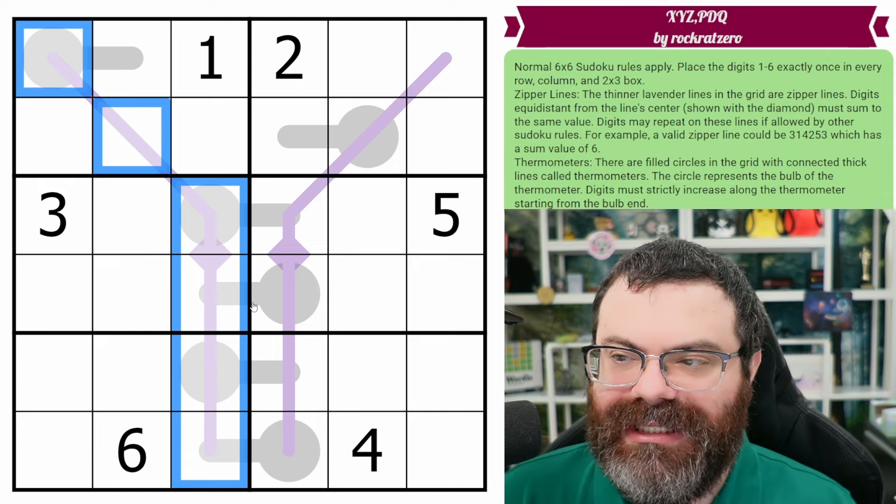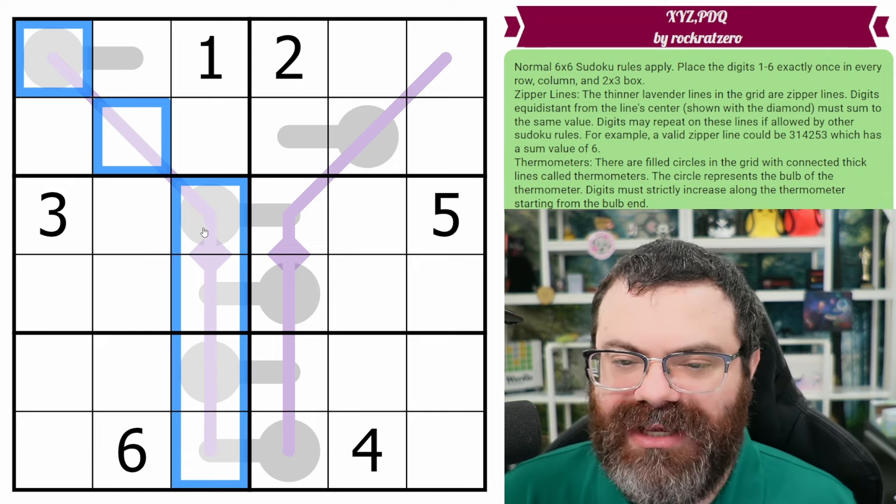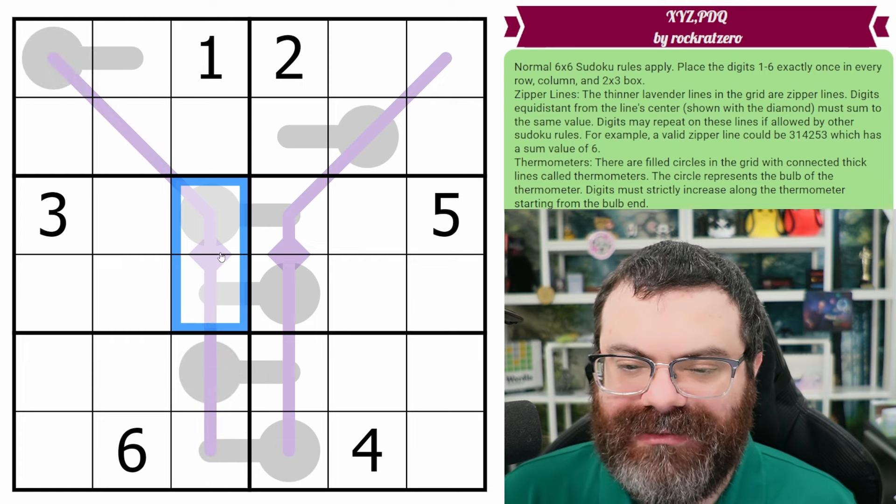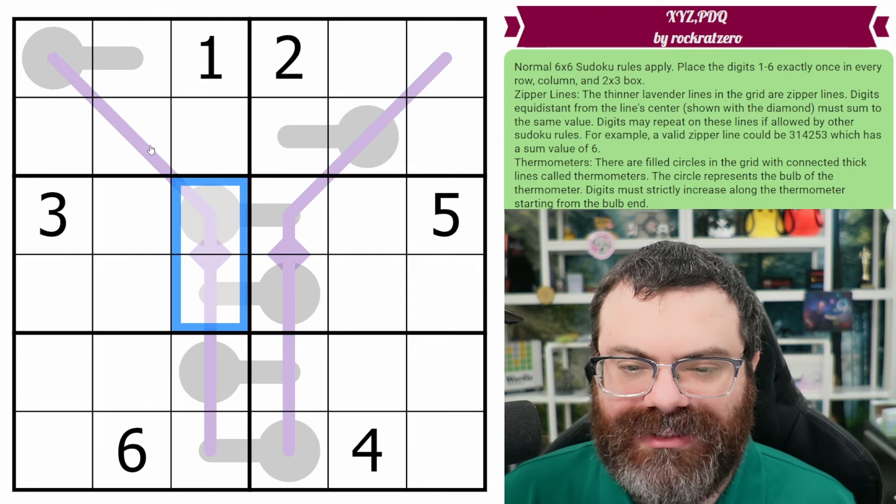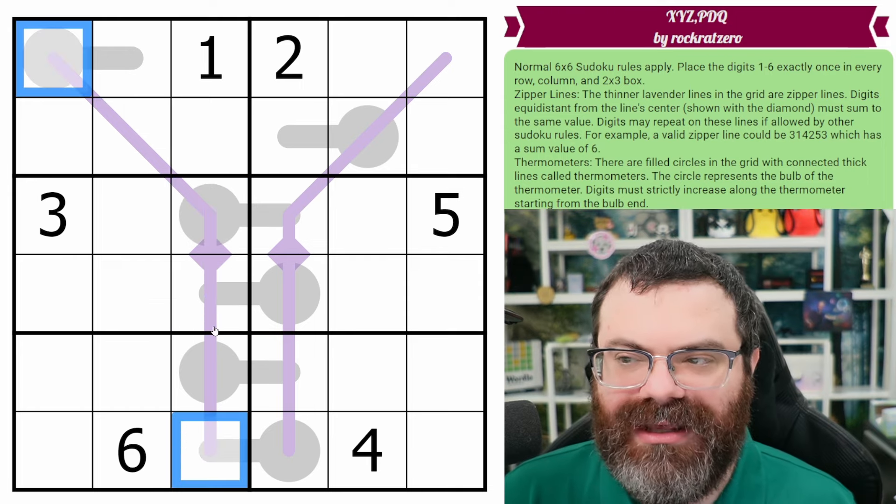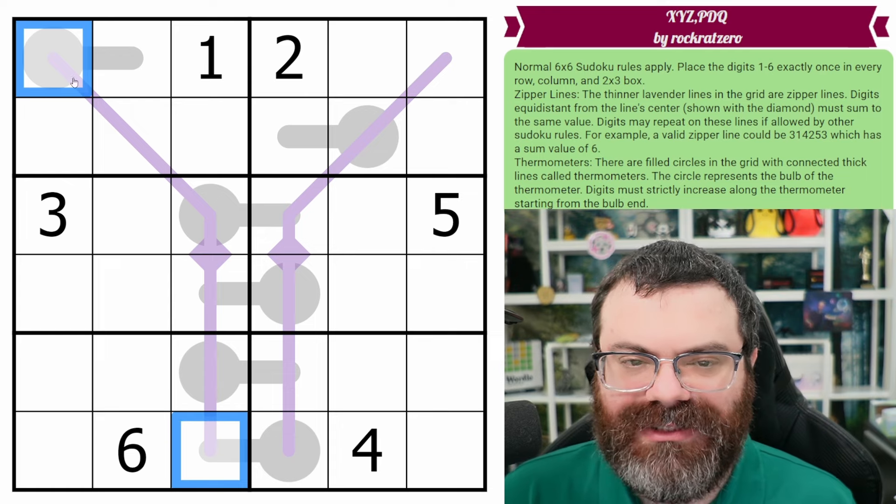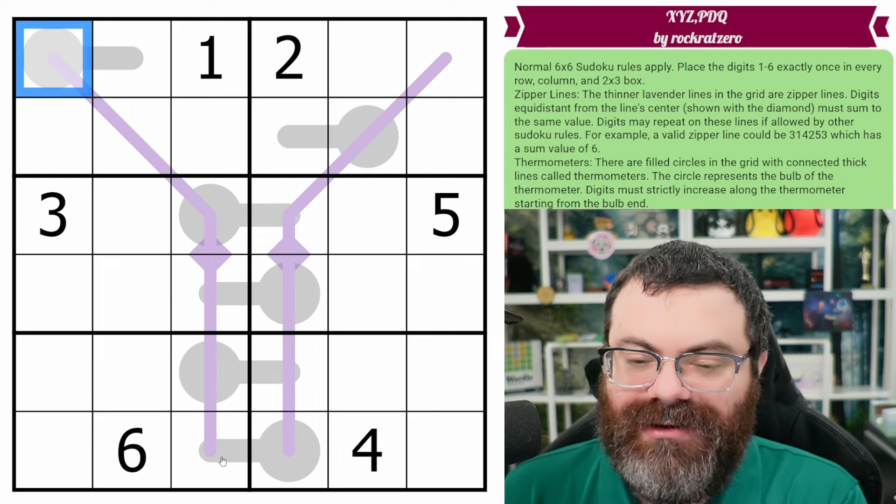The way zipper lines work is digits that are equidistant from the line center—these are even length lines, so we're using a diamond for that—but these two cells, these two cells, and these two cells, they all sum to the same amount. So if I were to have, say, I don't know, a two and a—let's not put two, let's put a—wow, what can I put here?